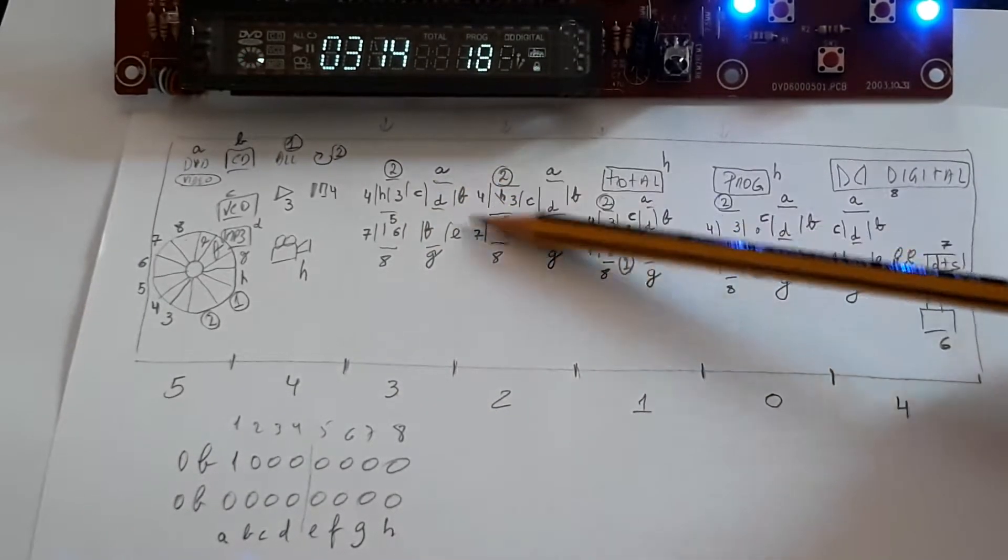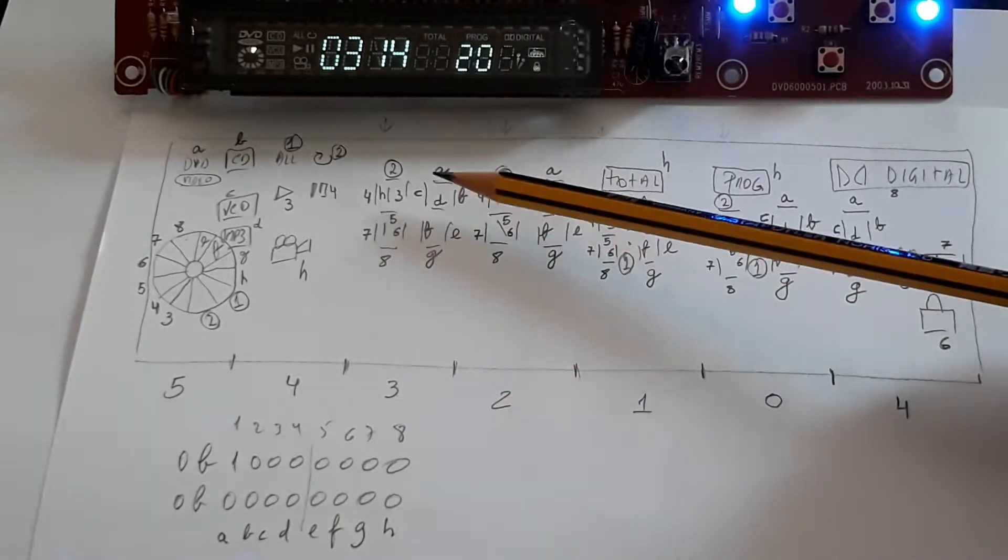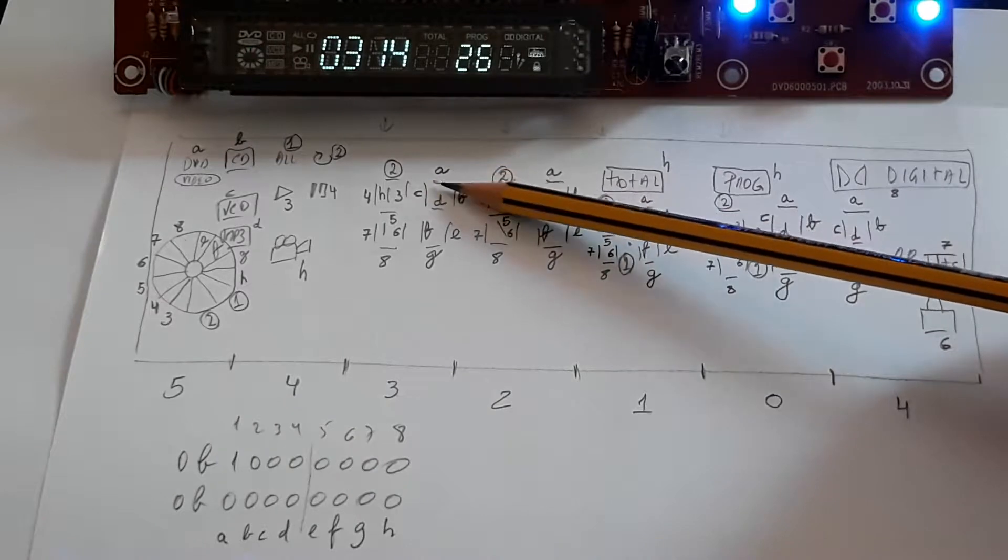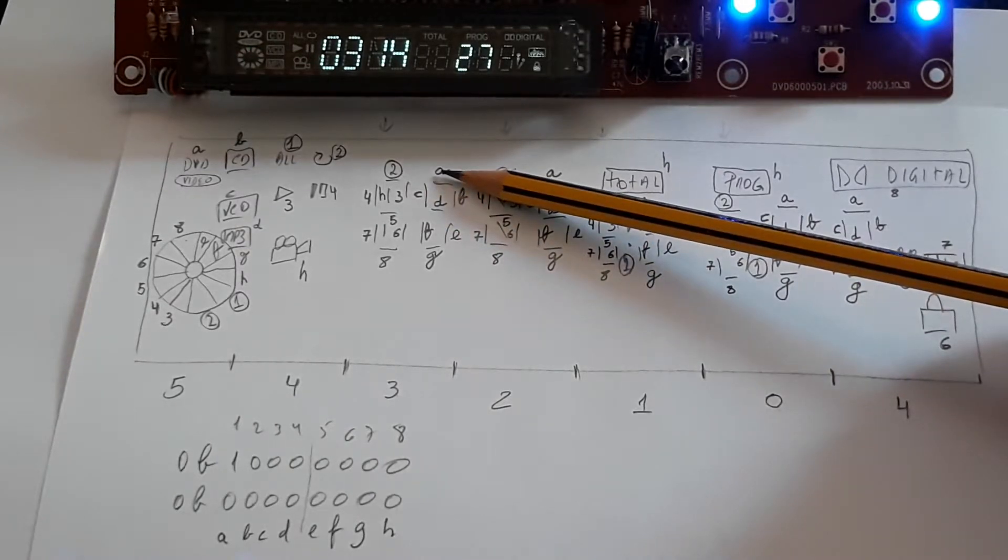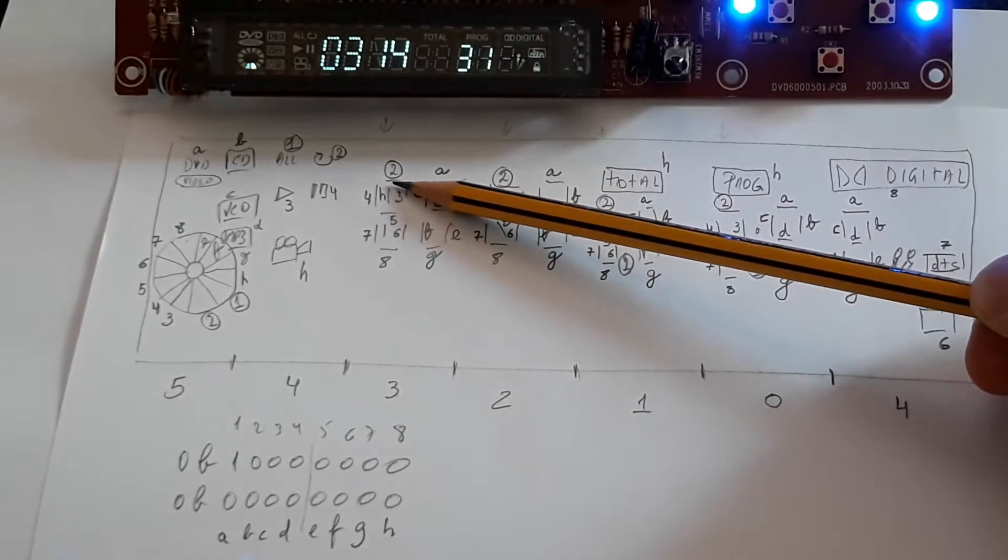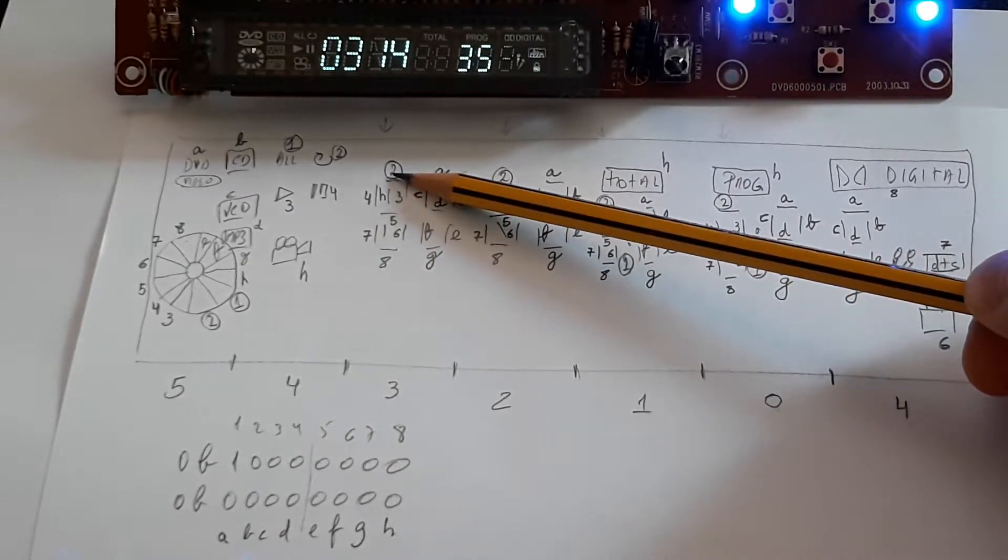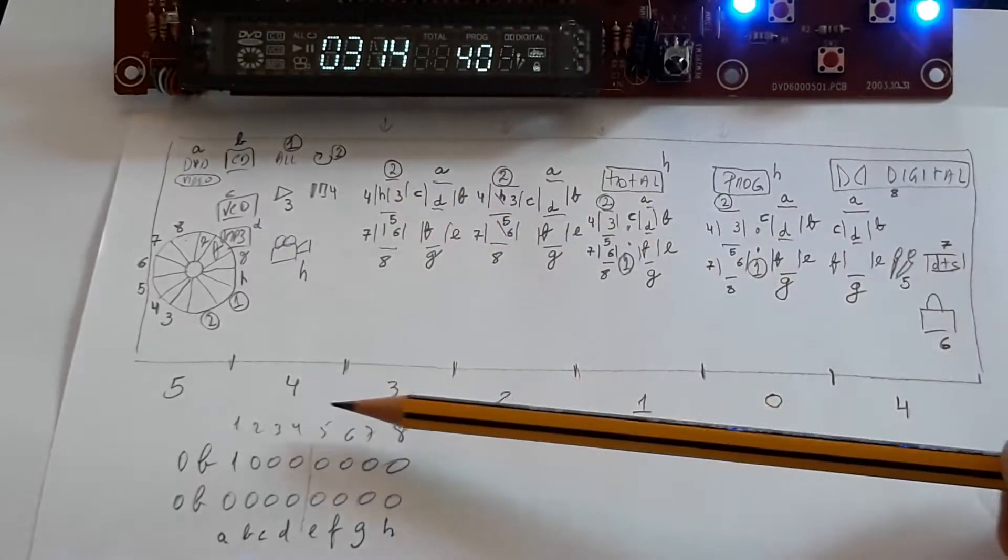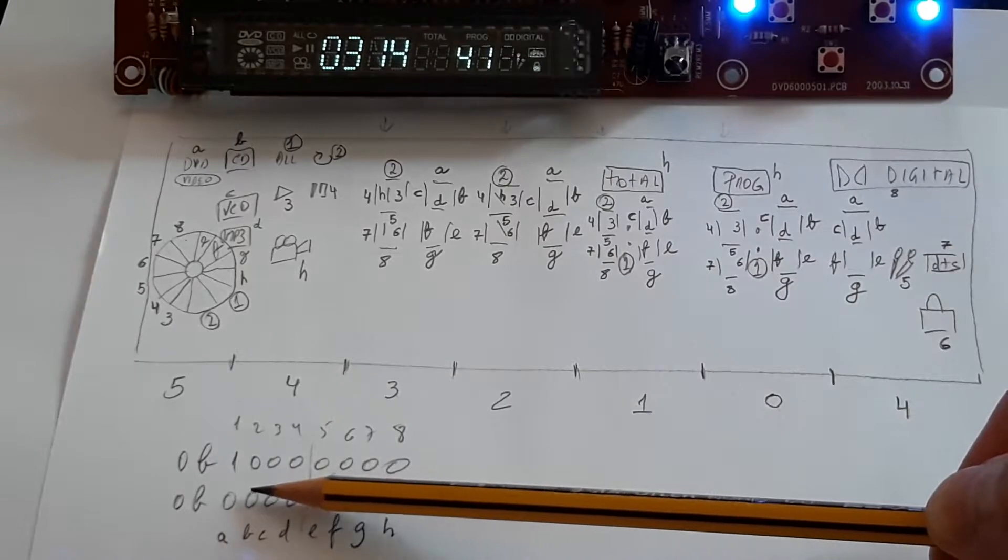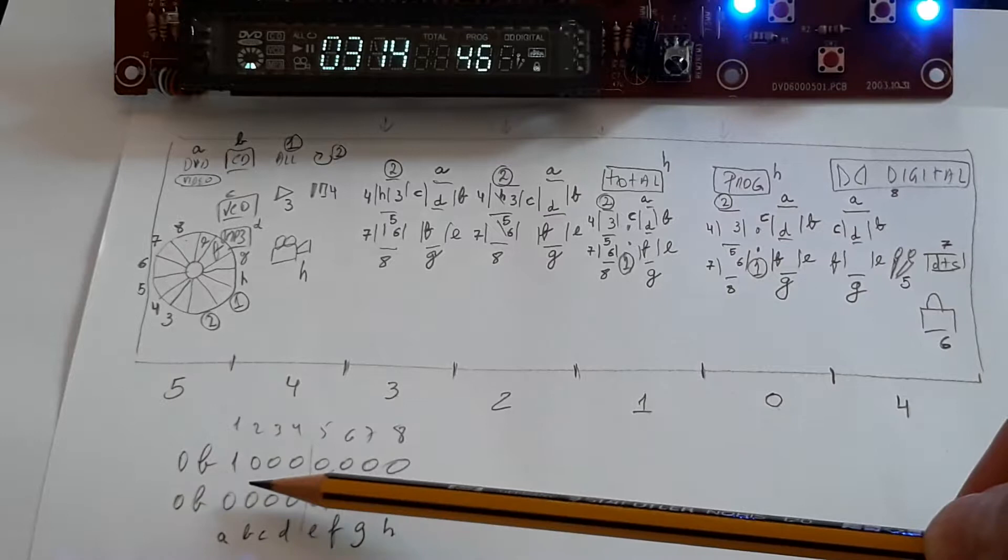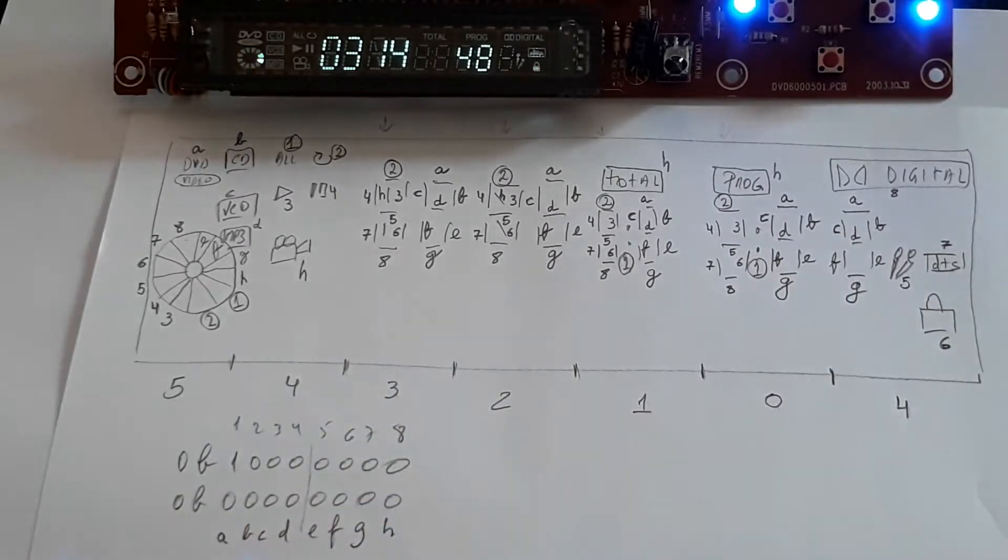This belongs to the same grid, but you can see the segment A belongs to the letter A, and the second digits of the same grid, the segment A belongs to the second bit of the byte. The segment A will be here for one and will be here for the other.